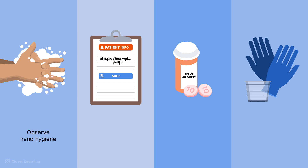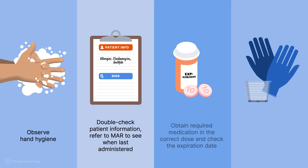Observe hand hygiene. Double-check the patient information to make sure you are giving the medication to the correct patient and to be aware of potential allergies. Refer to the Medication Administration Record, or MAR, to see when the medication was last administered. Obtain the required medication in the correct dose and check the expiration date. Gather any equipment needed to administer the drug. This preparation saves time and increases safety.